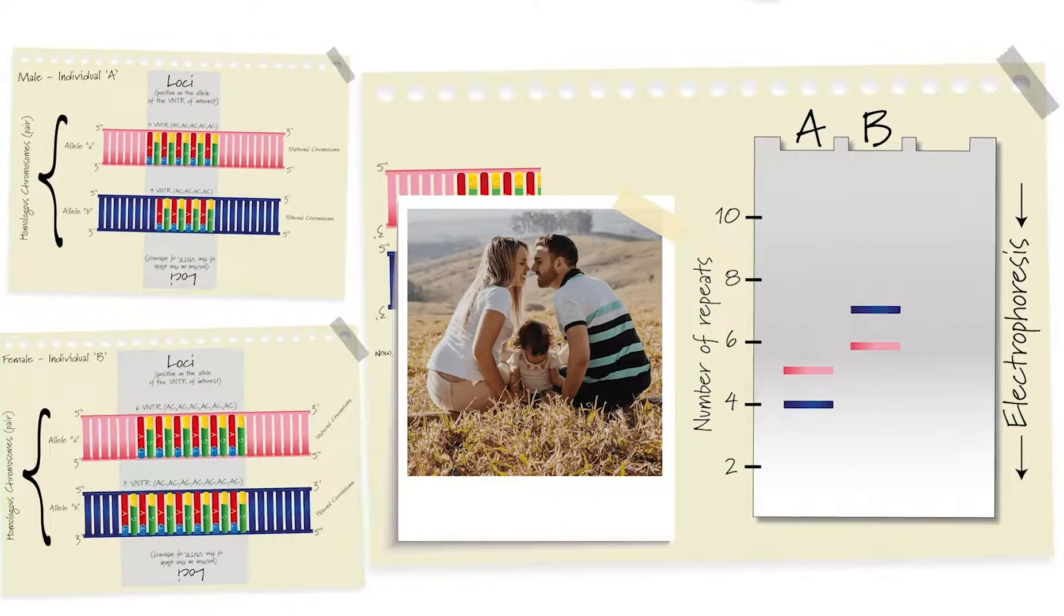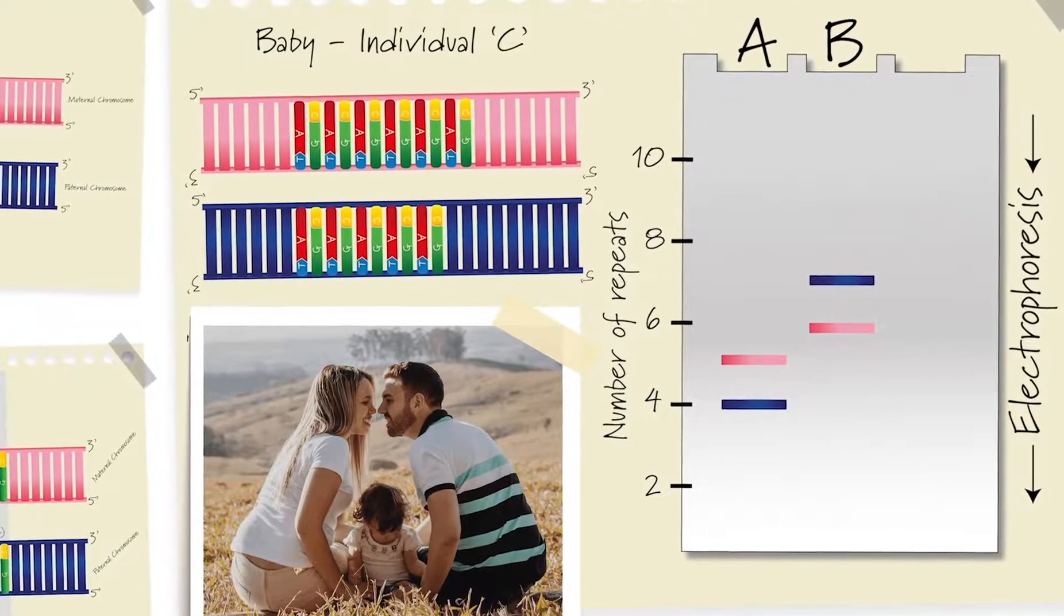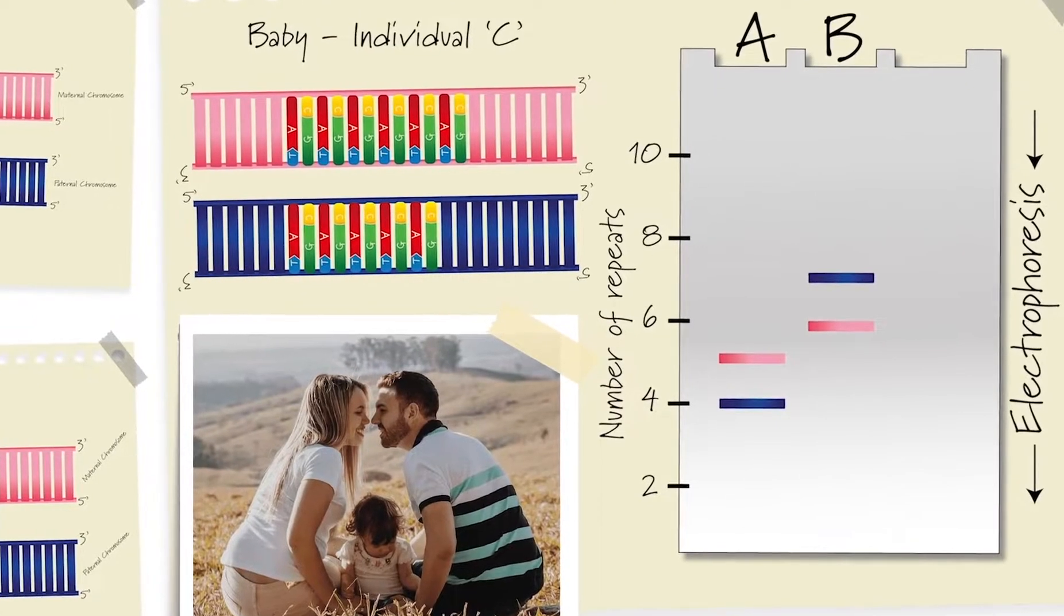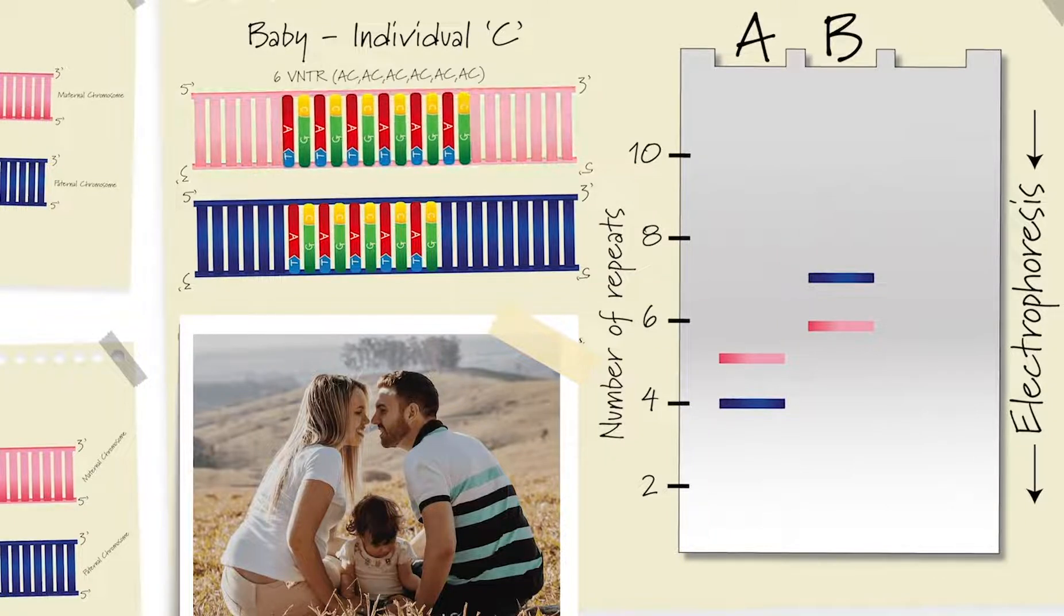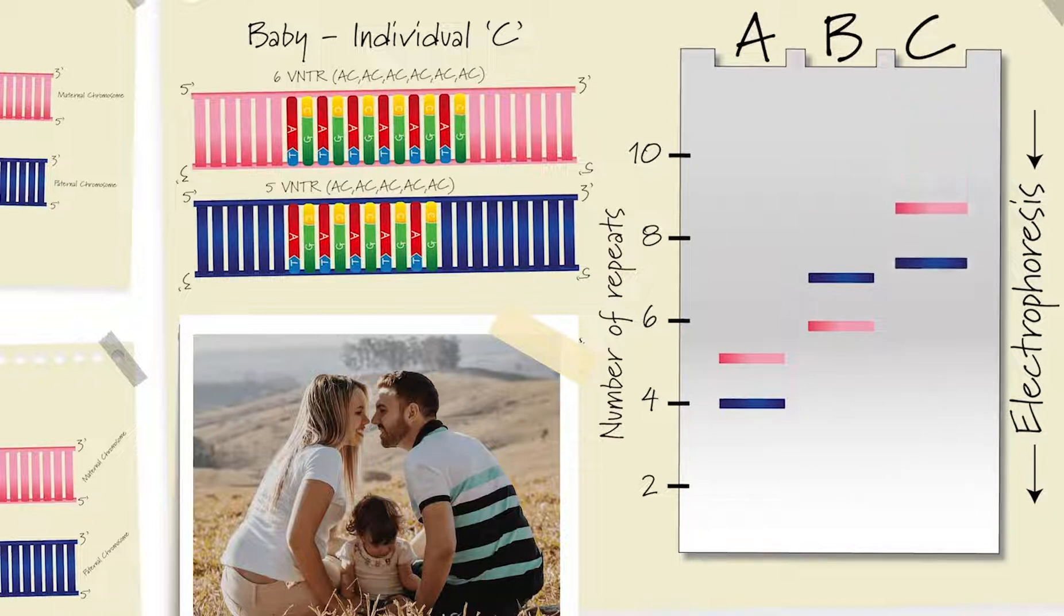Now, individual A and B have a baby. We'll call the baby individual C. Let's take a look at the baby's VNTR at the same loci, and see how this compares to the parents. Here, we can see that baby has inherited the VNTR with 6 repeats from the mother, B, and has inherited the VNTR with 5 repeats from the father, A. When we run this sample through the gel, we can compare the banding pattern for the baby, individual C, with the parents, A and B.